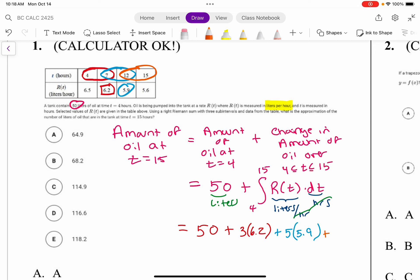And then lastly, the last rectangle would have a width of 3, and our last y value is 5.6.